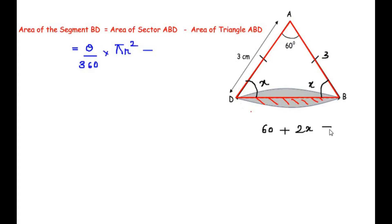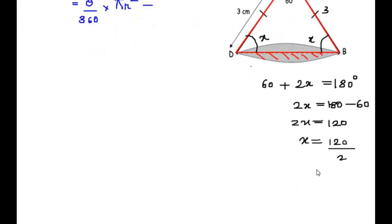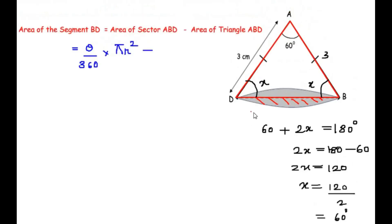Let each base angle of triangle ABD be x. Using the angle sum property: 60 + x + x = 180, so 2x = 120, giving x = 60 degrees. All three angles are 60 degrees, confirming it is an equilateral triangle. The formula for the area of an equilateral triangle is root 3 over 4 times side squared.